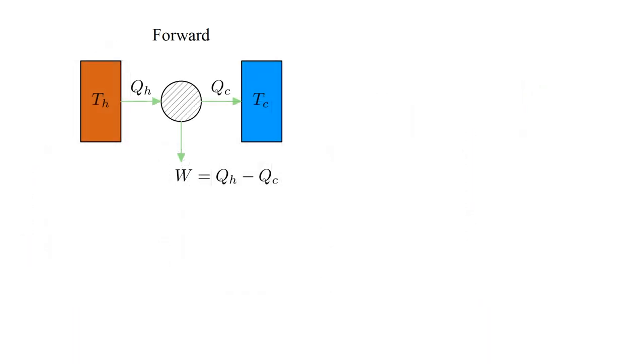Here is a schematic representation of the Carnot cycle run in the forward direction. Heat Q hot is extracted from the hot reservoir. Some of this energy is converted into work W. The remainder is delivered as heat to the cold reservoir. By the first law, Q hot equals W plus Q cold. One way to interpret this process is to say that a heat engine uses the natural tendency of heat to flow from hot to cold, in order to generate mechanical work.